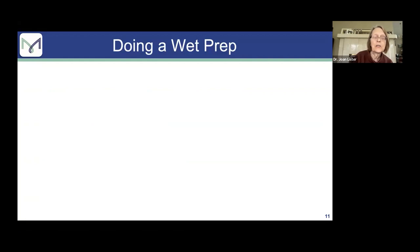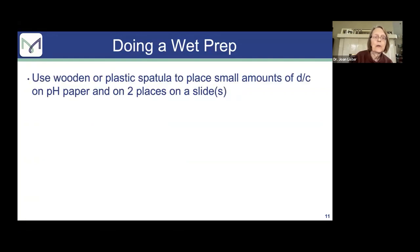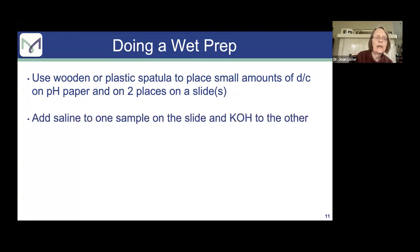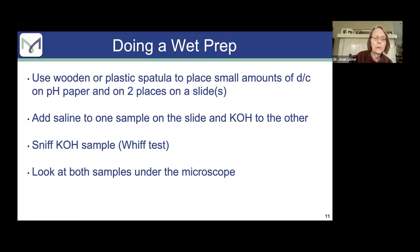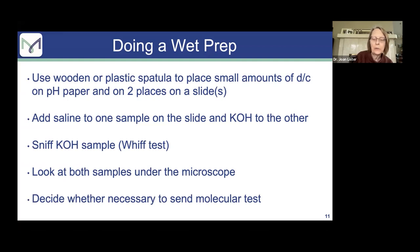It sounds like you all know how to do a wet prep — putting a little bit of discharge on pH paper and on two places on slides, adding saline to one and KOH to the other. KOH gives you that very distinctive odor when you have BV, and then you can look at both samples under the microscope. After that, you can decide whether or not you need to send the other testing to the lab.